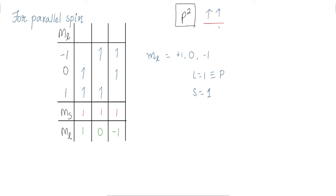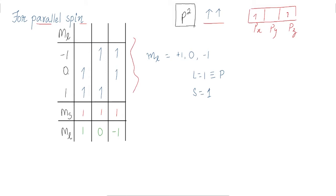We have two electrons in p², so we have three p orbitals and there can be many combinations — one electron here and one here, or one in the first and one in the last. These are px, py, and pz. Taking these combinations into mind, for parallel spin we can have these types of combinations. The ml values are minus one, zero, and one for px, py, pz.